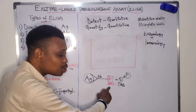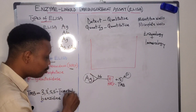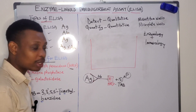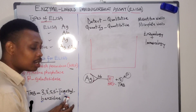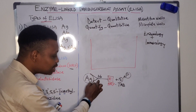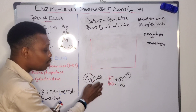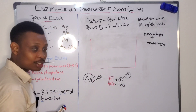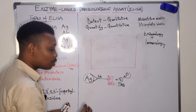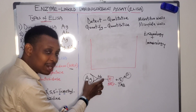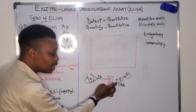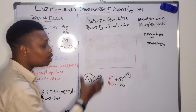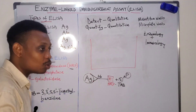The enzyme cannot convert the substrate to product if the antigen is not present. If the antibody does not bind to any antigen, even though it is still linked to the enzyme, the substrate will be added but there will be no product. Product is only formed when the antigen is bound to the antibody, which is in turn conjugated to the enzyme — then the enzyme catalyzes the substrate to form a colored product.